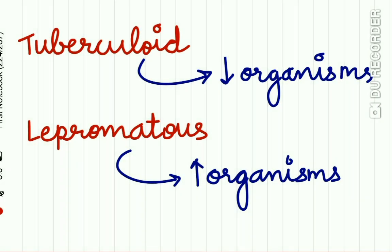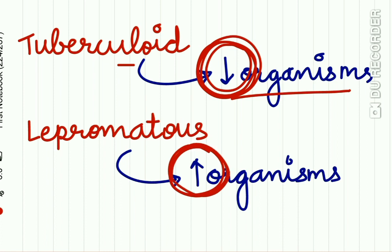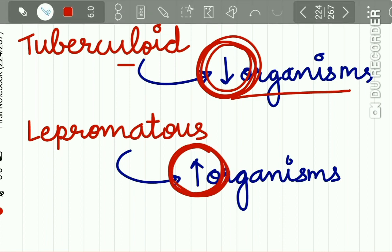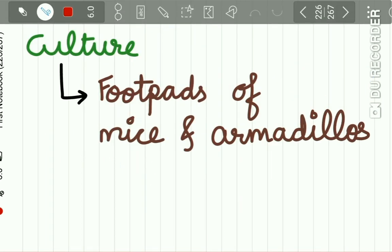Tuberculoid leprosy shows a decreased organism count, while lepromatous leprosy has a higher organism count in the lesions.